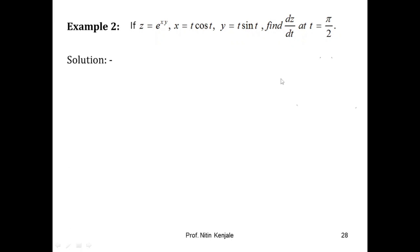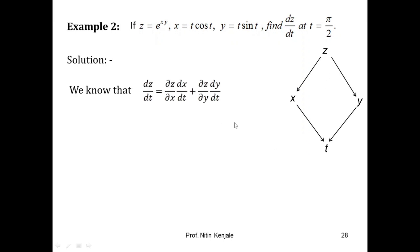Now let us go ahead to another example. Here z is defined as e^(xy), x = t·cos(t), and y = t·sin(t). We are asked to find dz/dt at t = π/2. Let us first draw the tree diagram: z is a function of x and y, and x and y are functions of t, so the total derivative formula applies: dz/dt = (∂z/∂x)(dx/dt) + (∂z/∂y)(dy/dt).